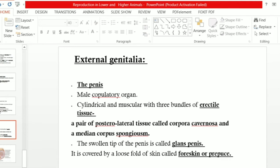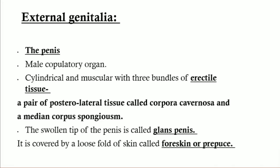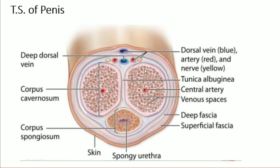The penis is a muscular organ and it has three bundles of tissue. This tissue is known as erectile tissue, which helps for erection. It consists of three bundles — two types of tissue: one is the posterolateral tissue called the corpora cavernosa, and the second is the median corpus spongiosum.